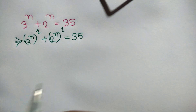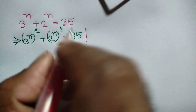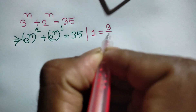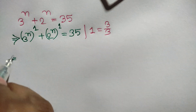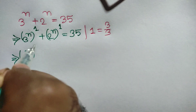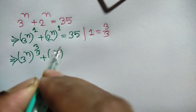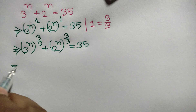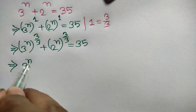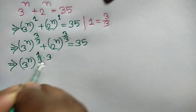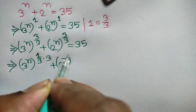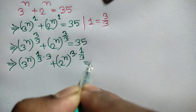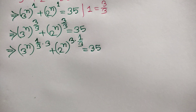Now we can write here 3 to the power n whole to the power 1 plus 2 to the power n whole to the power 1 is equal to 35. Now this can be written as 3 to the power n whole to the power 3 over 3 plus 2 to the power n whole to the power 3 over 3 is equal to 35.